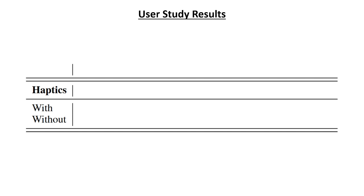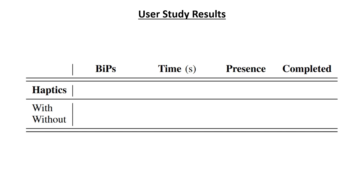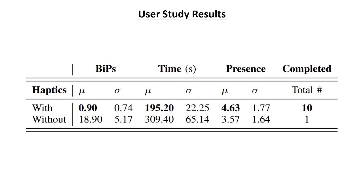To measure the efficacy of our active haptic guidance, we conducted a user study where one group of participants completed the navigation task with the haptic proxy and the other group completed the task without any haptic feedback. To measure participants' performance, we recorded the number of times they reached the boundary of the tracked space and had to turn around — which we call a break in presence — the time taken to finish the task, participants' subjective feelings of presence in the environment, and the number of participants who reached the goal destination within the experiment time limit. Our results showed that across all performance metrics, the participants who had the haptic proxy performed better than the participants who did not. These results support the notion that haptics can be effectively used to influence the user's behavior and guide them through a virtual experience, to both improve their safety and improve their immersion in the experience.